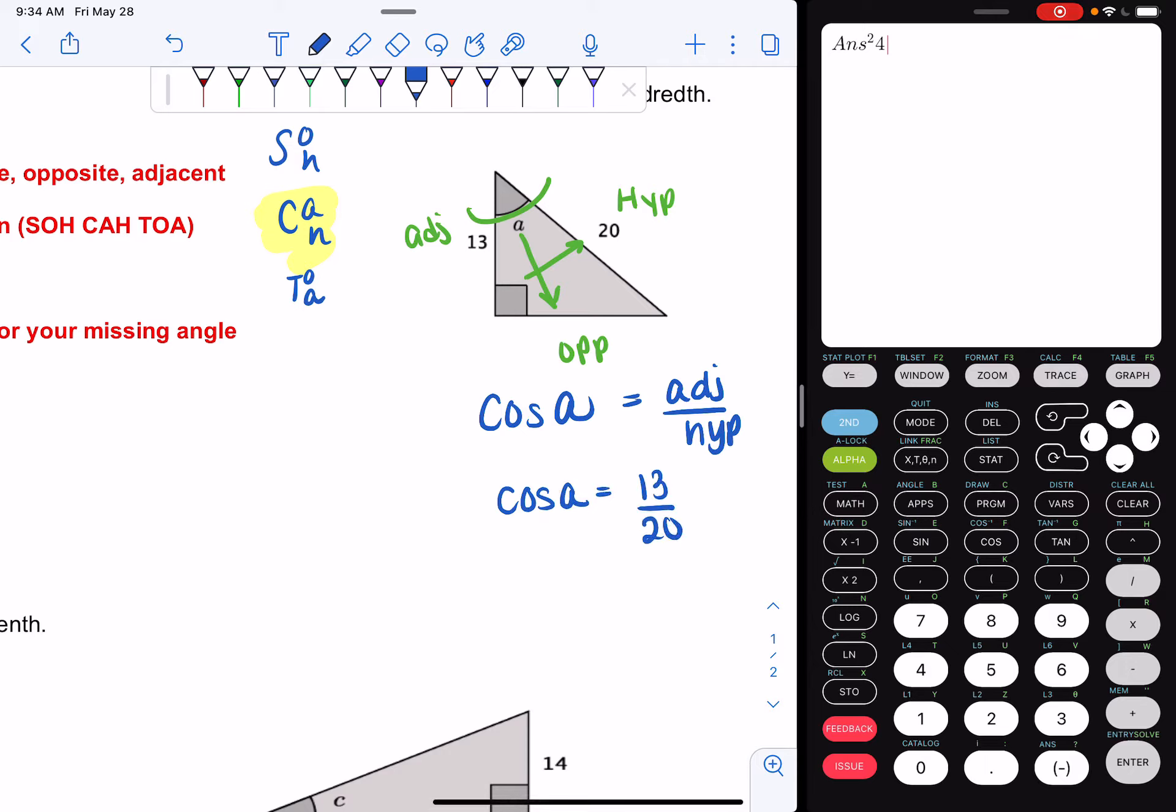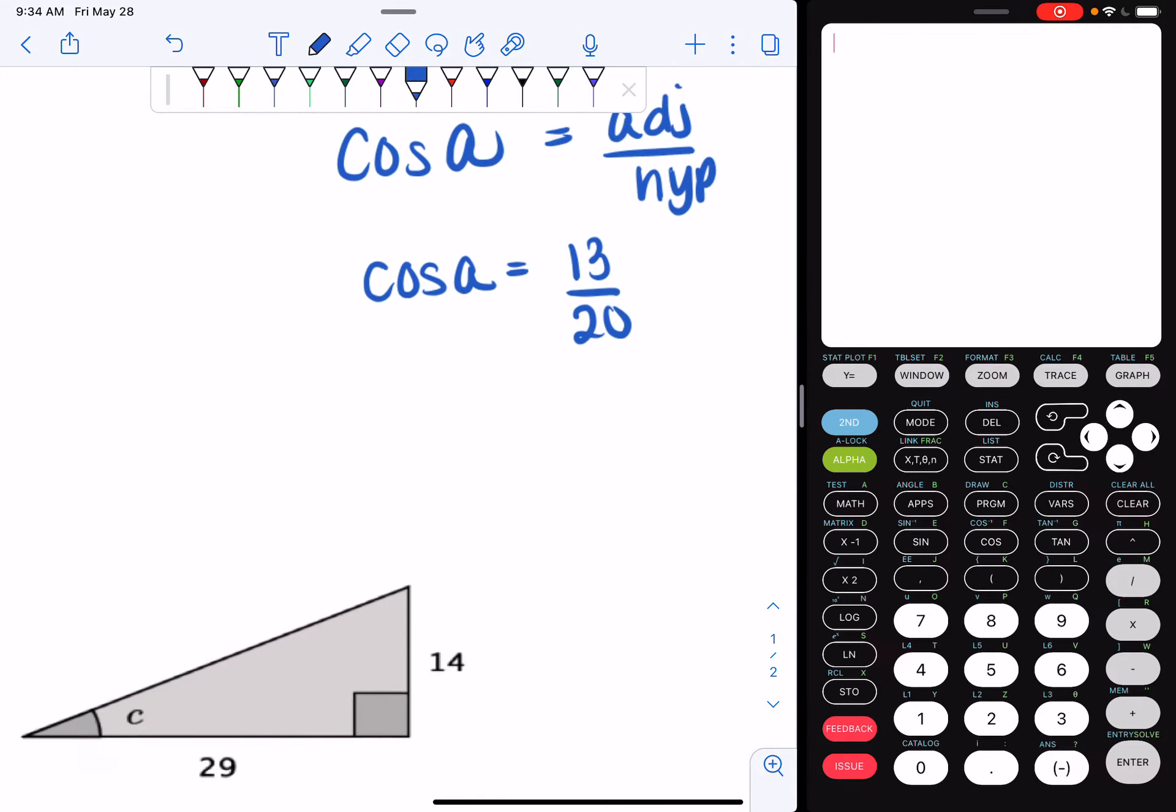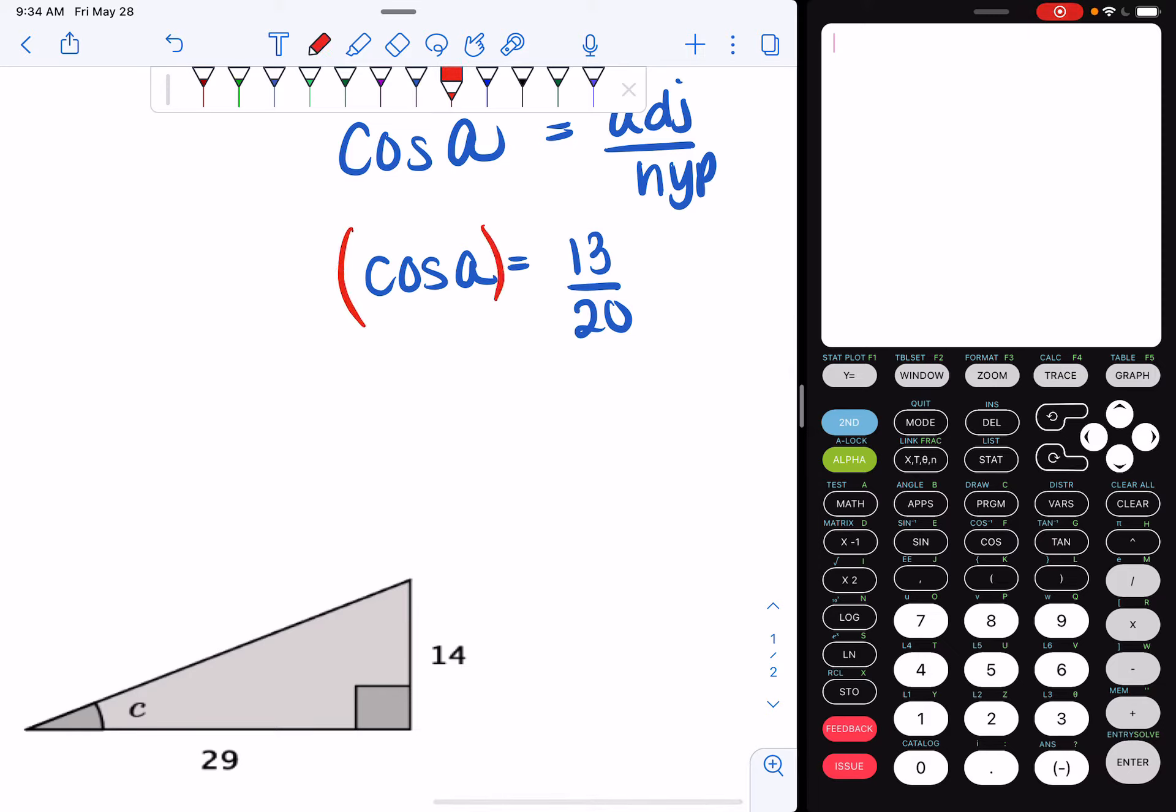So now if I want to solve for A, here's our next step. We set up our equation. Now we're going to use inverse trig to solve. So when I say inverse trig, the way we're going to make this look is raise each side to the negative one. So now we're going to do A equals cosine to the negative one of 13 over 20. That is going to be the procedure you do for every single inverse trig problem. So I'm going to do second cosine 13 over 20. Hit enter. And I get 49.458.